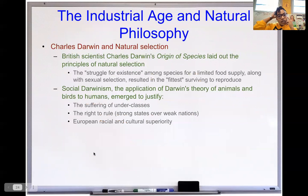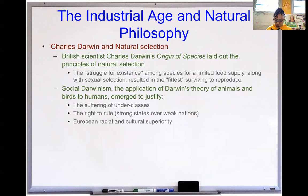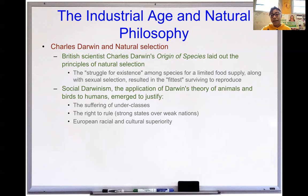Now the industrial age and natural philosophy — Charles Darwin and natural selection. Honestly, Darwin bothers me a lot, because when we hear about natural selection and the Galapagos Islands, what they're not telling you is that he was also categorizing people by their races — he's one of those original people who pushed racist science. Darwin was a British scientist who created 'Origin of Species' and laid out the process of natural selection: the struggle for existence among species for limited food supply, along with sexual selection, resulted in the fittest surviving to reproduce.